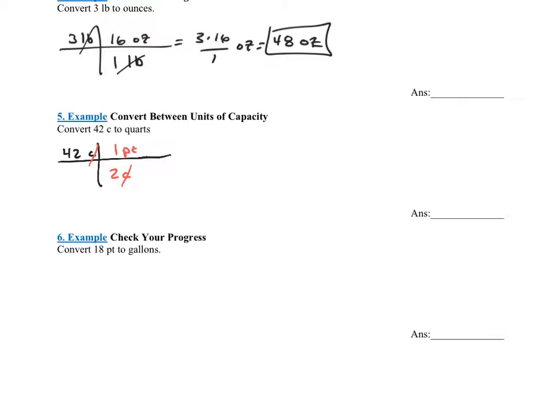Once I'm in terms of pints, I'll do another conversion factor. I know that there's two pints for one quart. Now notice that my units are going to be in terms of quarts. I have 42 times 1 times 1 on top, and on bottom I have 2 times 2. So it's effectively 42 divided by 4.